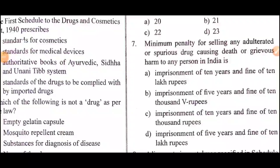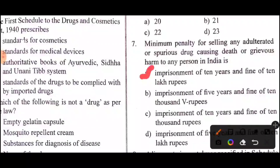Question 7: What is the minimum penalty for selling any adulterated or spurious drug causing death or grievous harm to any person in India? The answer is Option A: imprisonment of 10 years and a fine of 10 lakh rupees.